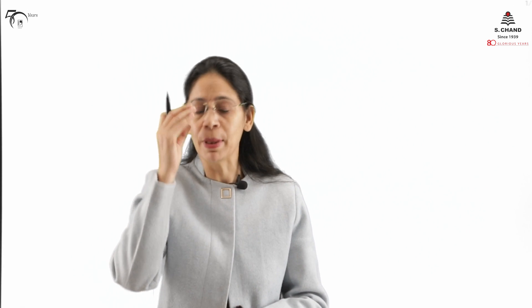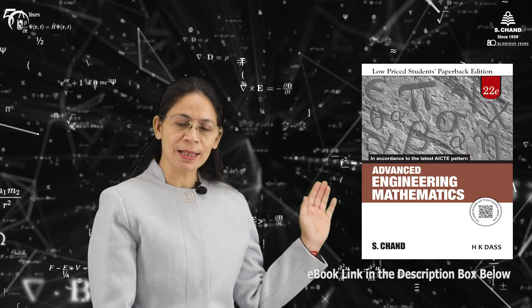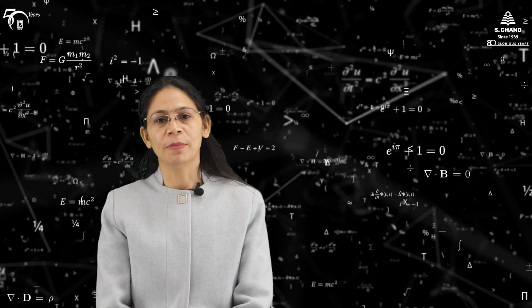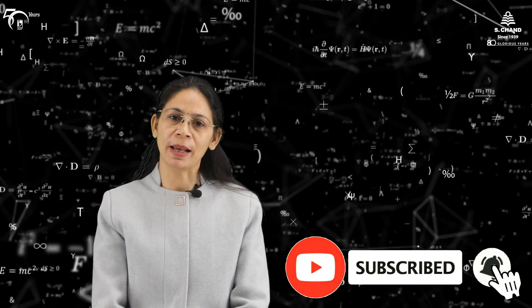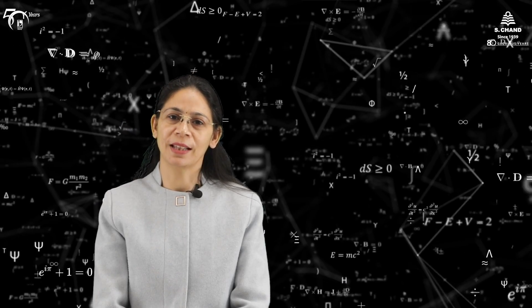In today's video we have learned how to write a transformation equation, what conformal mapping means, how to check whether a mapping is conformal, and the Möbius transformations — translation, rotation, stretching, and inversion — and how a figure in the XY plane is mapped into the UV plane. For in-depth knowledge, you can refer to the book from S-Chan publishing. Please like, share, and subscribe, and press the bell icon for notifications. Thank you very much.